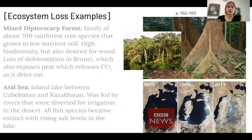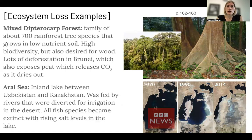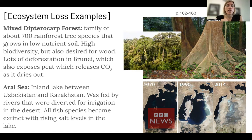Ecosystem loss examples: mixed dipterocarp forest is a family of about 700 rainforest tree species that grows in low-nutrient soil. In rainforests, the soil quality is quite poor, and almost all of the nutrition is held within the tree species. When those trees are harvested — as happened with dipterocarp forests in Brunei — all of the carbon and all of the nutrients go with them, and that ecosystem is no longer supported because those nutrients are not in the soil.